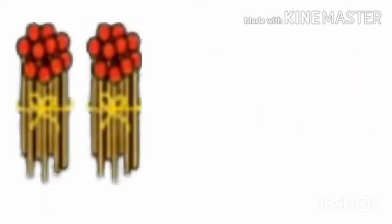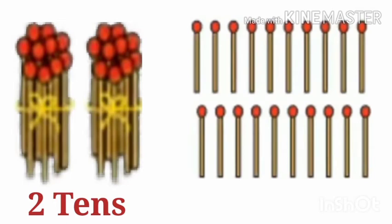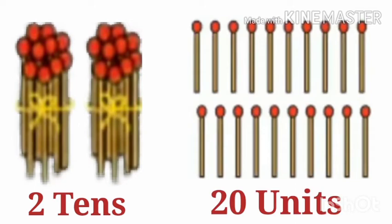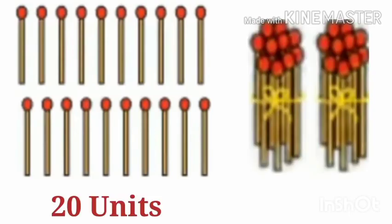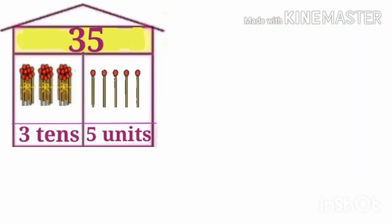Now see here, there are 2 bundles of sticks. That is, 2 tens. And when we open 2 tens bundles, we again get 20 single sticks. That is, 20 units. 2 tens is equal to 20 units. Or, we can also say, 20 units is equal to 2 tens. To understand it more clearly, let's see some more examples.